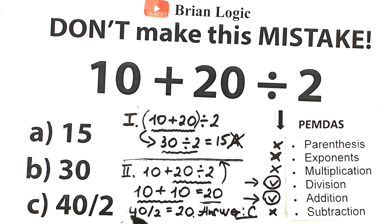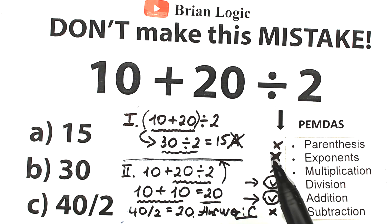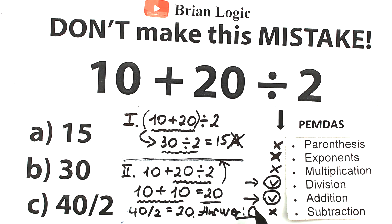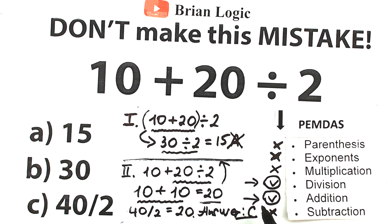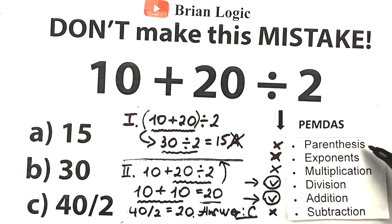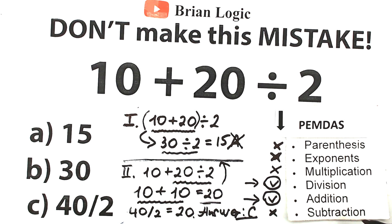Pretty easy stuff once you know the steps. Here's the problem, here's PEMDAS — you go through the steps from higher priority to lower priority: parentheses, exponents, multiplication and division, and finally addition and subtraction. The key lesson is: division and multiplication always come before addition and subtraction. Divide first, multiply first, then add and subtract. Exponents come before multiplication and division, and parentheses come before exponents. That's the priority hierarchy.